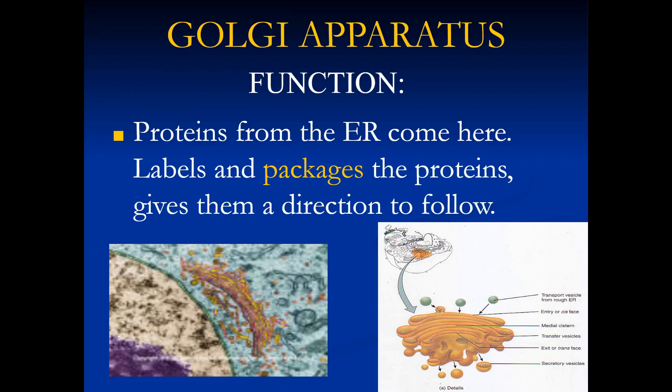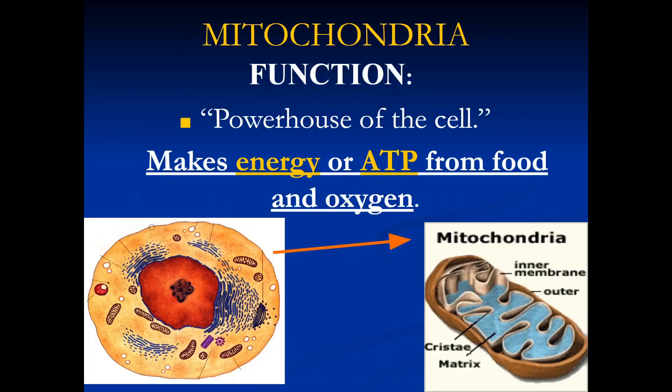The Golgi apparatus takes proteins from the endoplasmic reticulum, and labels and packages the proteins, giving them directions to follow. The mitochondria, also known as the powerhouse of the cell.